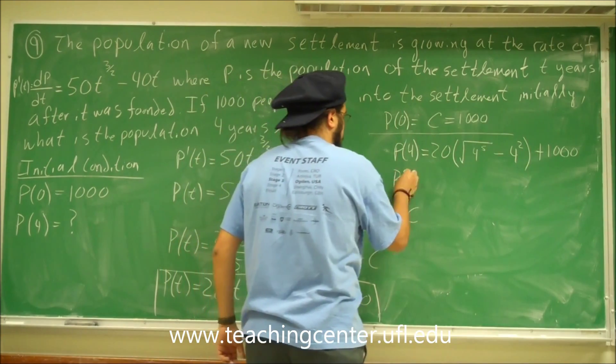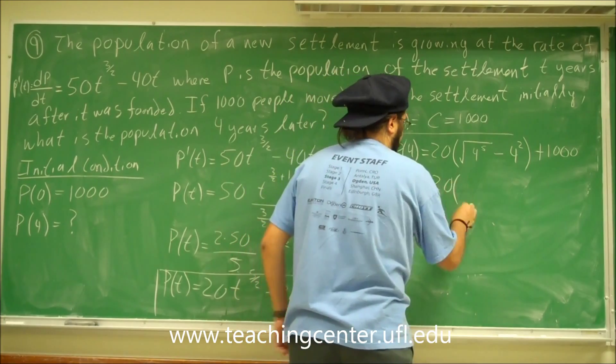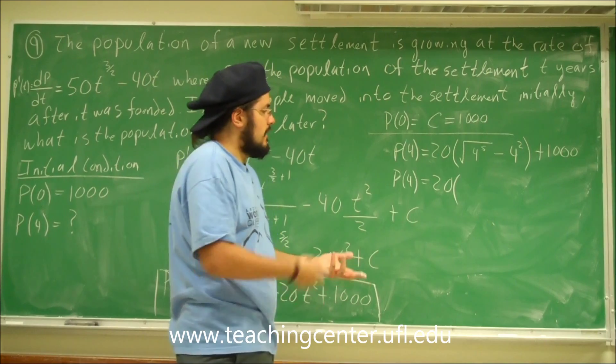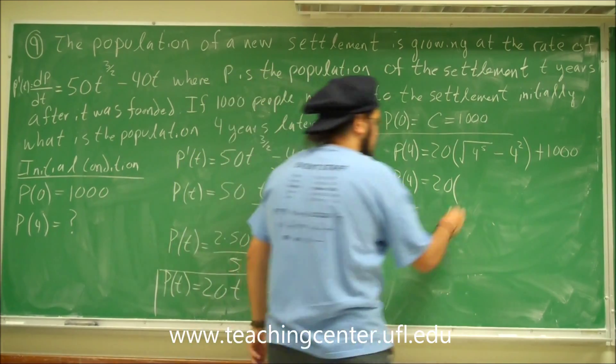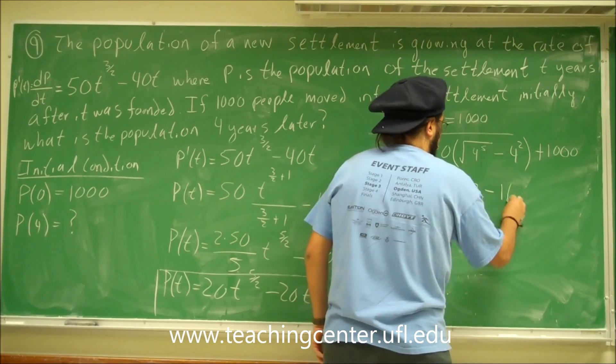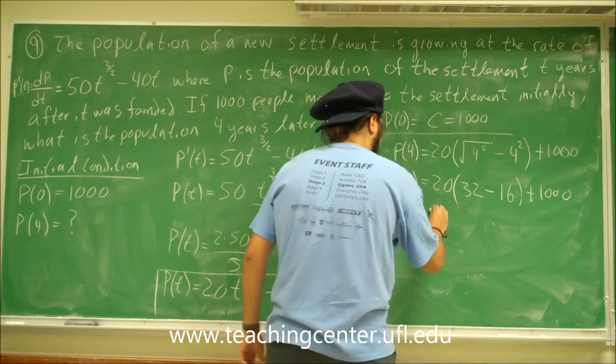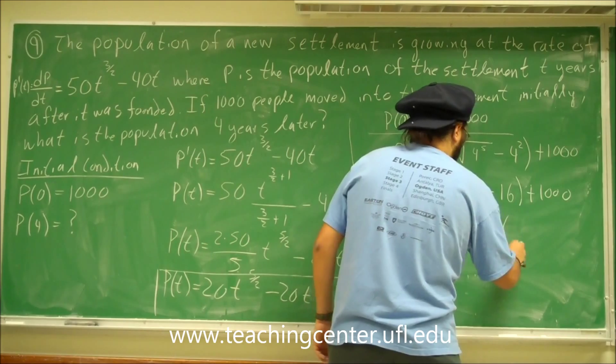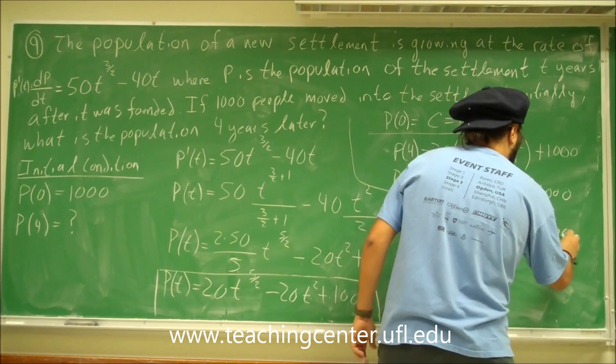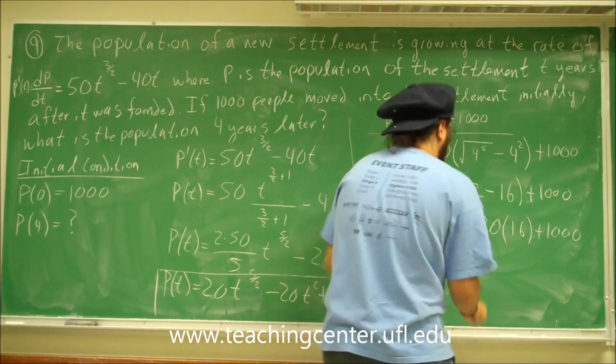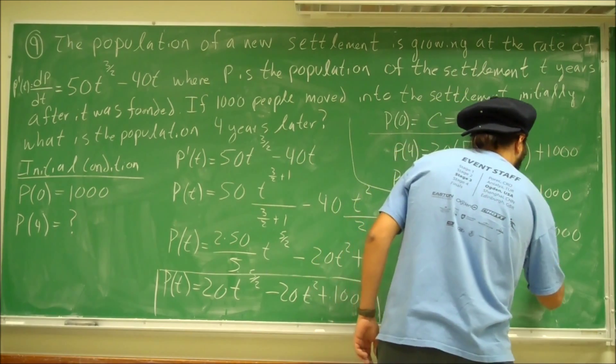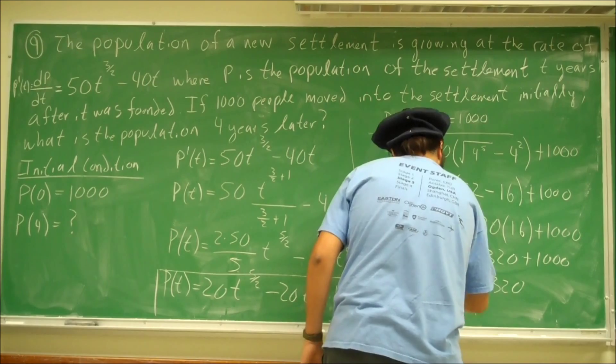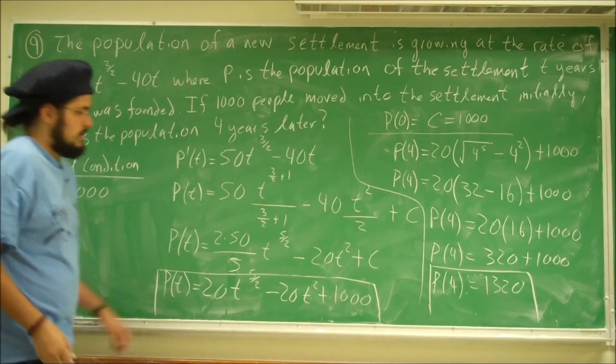So now we have p(4). That's 20. The square root of 4 to the 5th, we can take out 2 fours, so that would be 16. And the square root of the last 4 is going to be 2, so 16 times 2 is 32. This is going to be 32 minus 4 squared is 16, plus 1,000. And then p(4), 20 times 16 is 320, plus 1,000. And finally, p(4) then is going to be 1,320. So that is the problem.